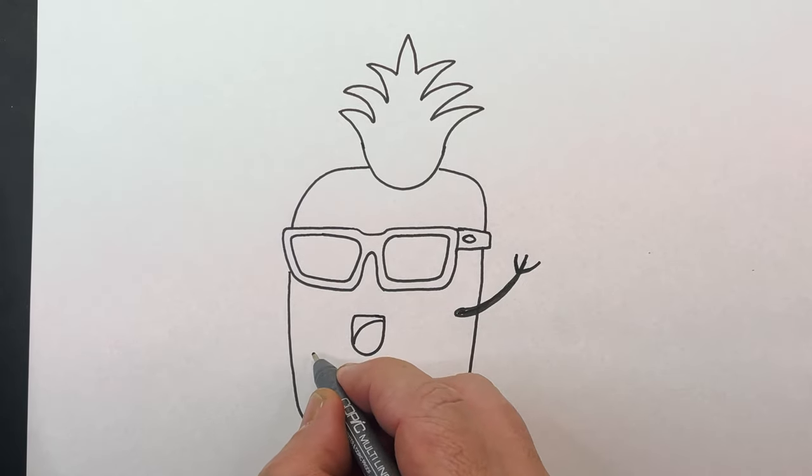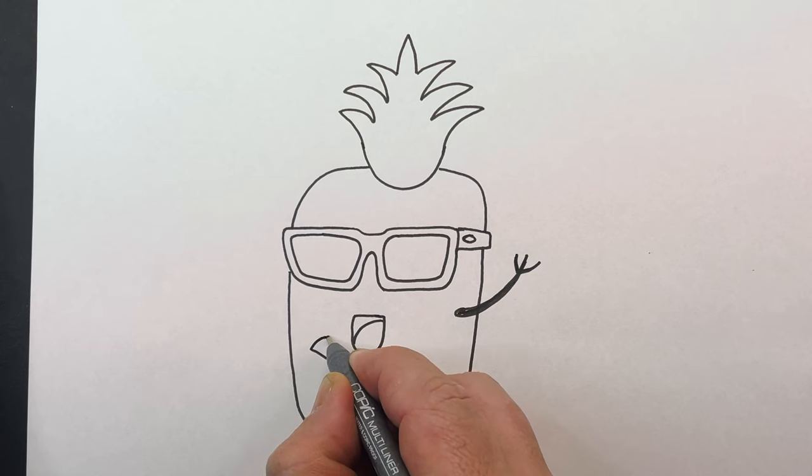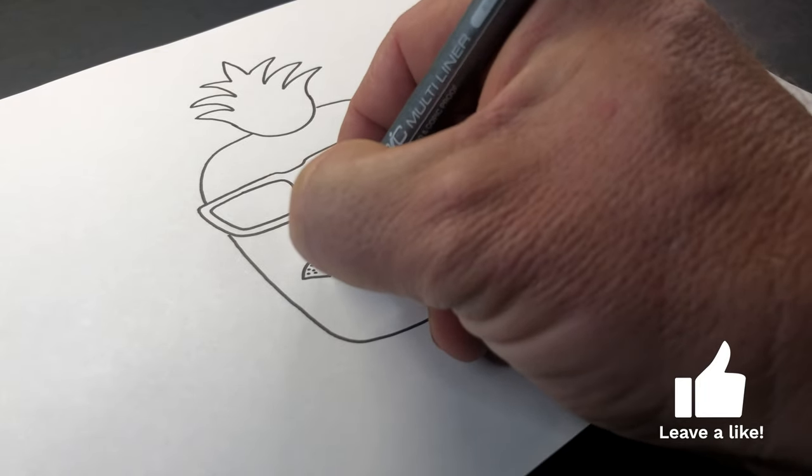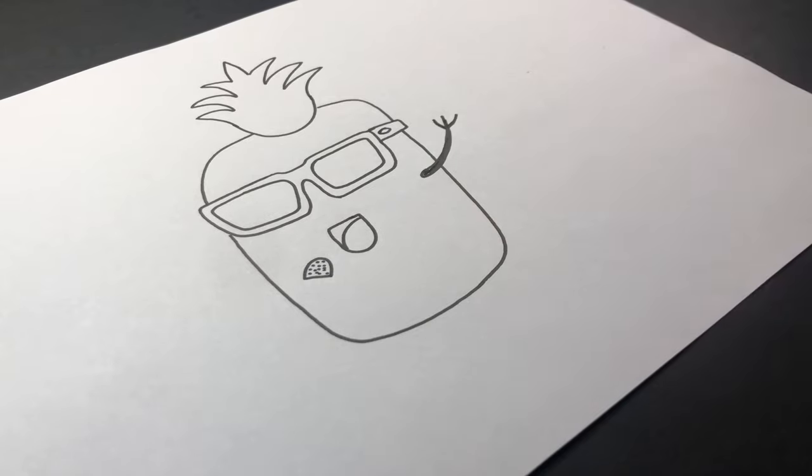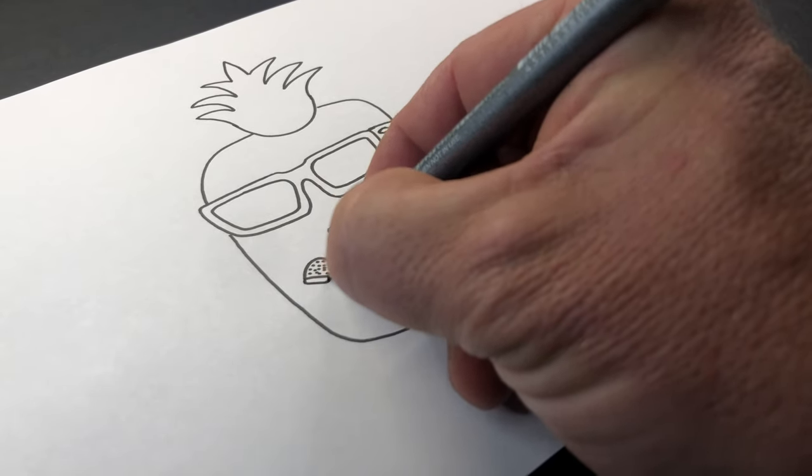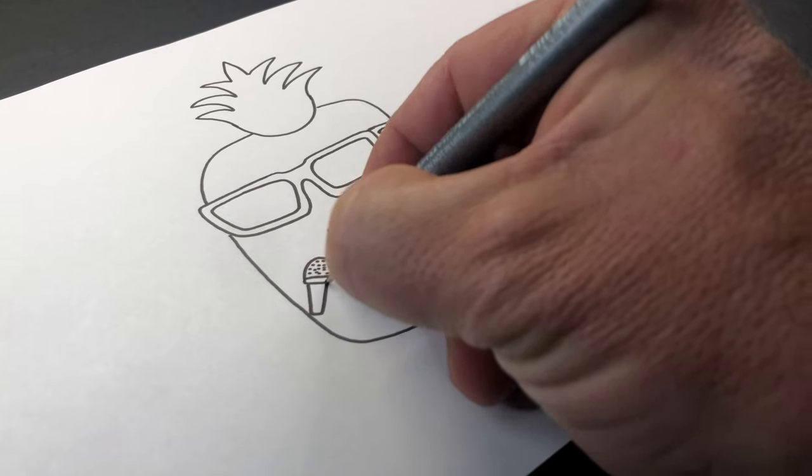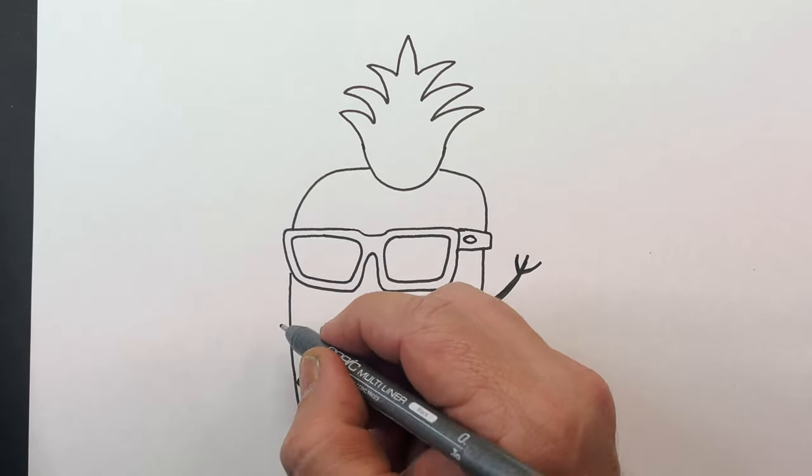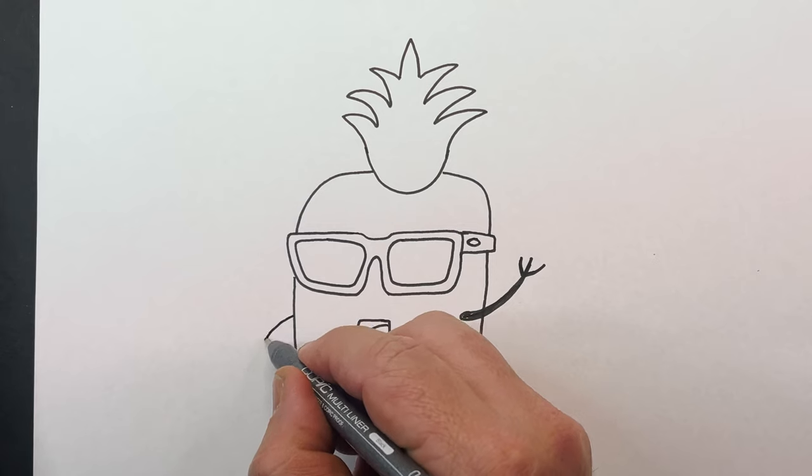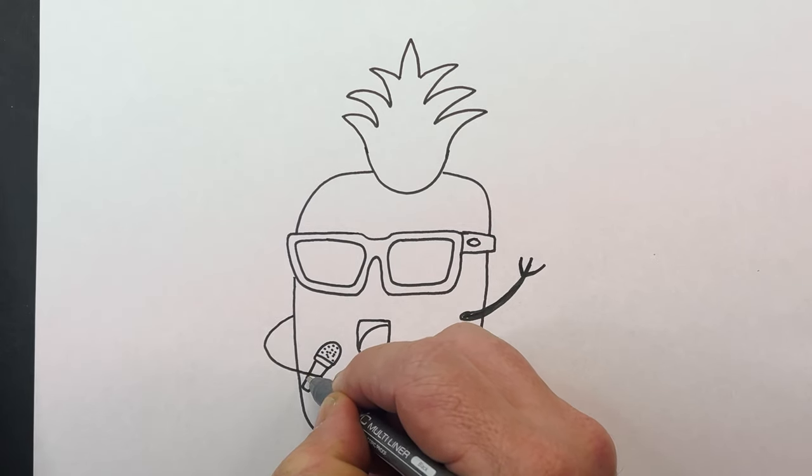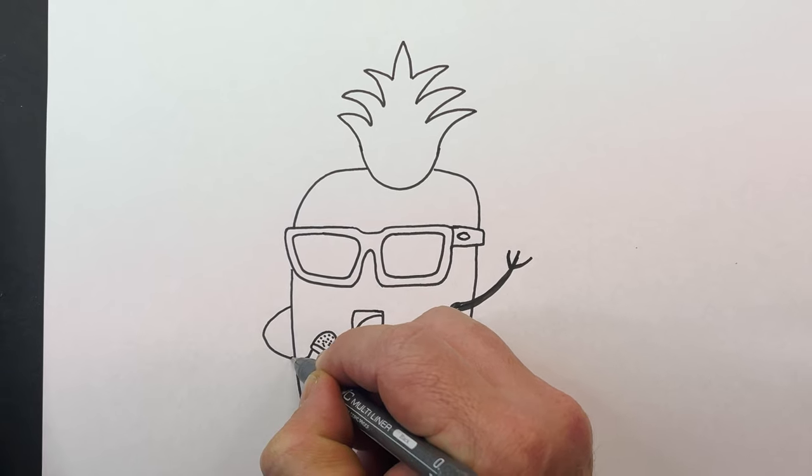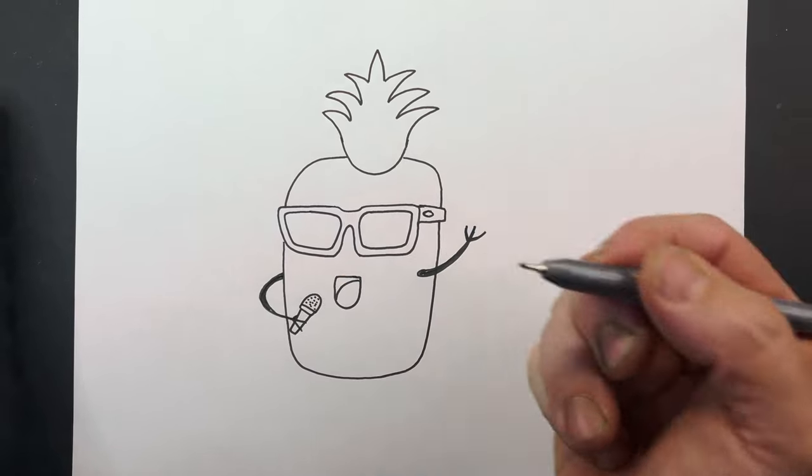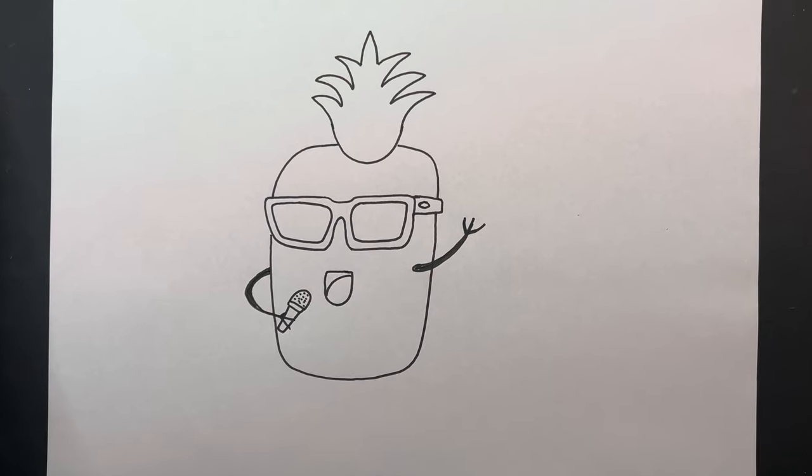Now we're going to draw a little microphone here. So let's draw a straight line with a semicircle like so. And put lots of little dots all over it. That's the microphone foam. And we're going to bring this and then make the microphone like that. And we're going to thicken this arm up behind there. So you can see that the pineapple is holding a microphone.